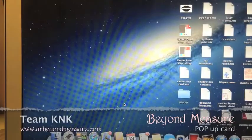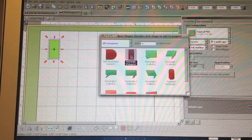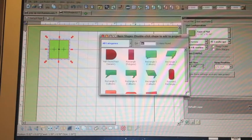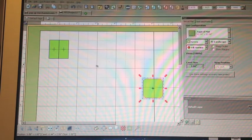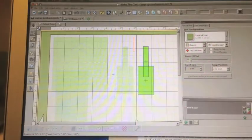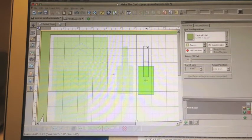Welcome to Beyond Measure and a Team KNK tutorial video. We're working in Make the Cut software. Go to basic shapes and get two rectangles and one rounded cornered square. We're creating a pop-up mechanism. Size and stack in the manner in which you need it for your mechanism.